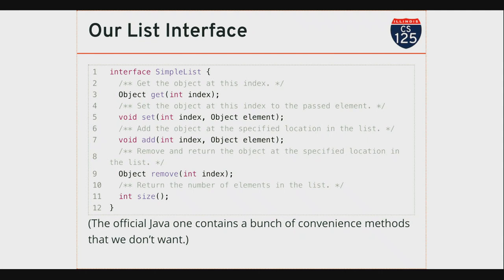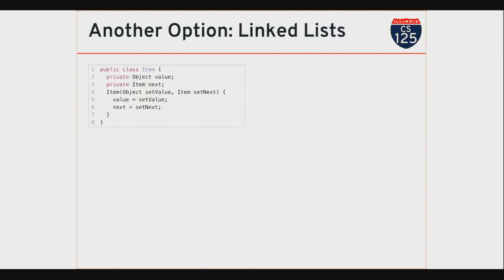Here's the interface we're using for both lists. These two lists behave identically — you can use them without knowing which one you're using. We'll actually have some questions on upcoming quizzes that involve guessing which list you are using based on performance characteristics. You can be given a reference to a simple list and add and remove items without knowing whether it's implemented using an array, linked items together, or some other way. This is our distillation of the Java list interface.